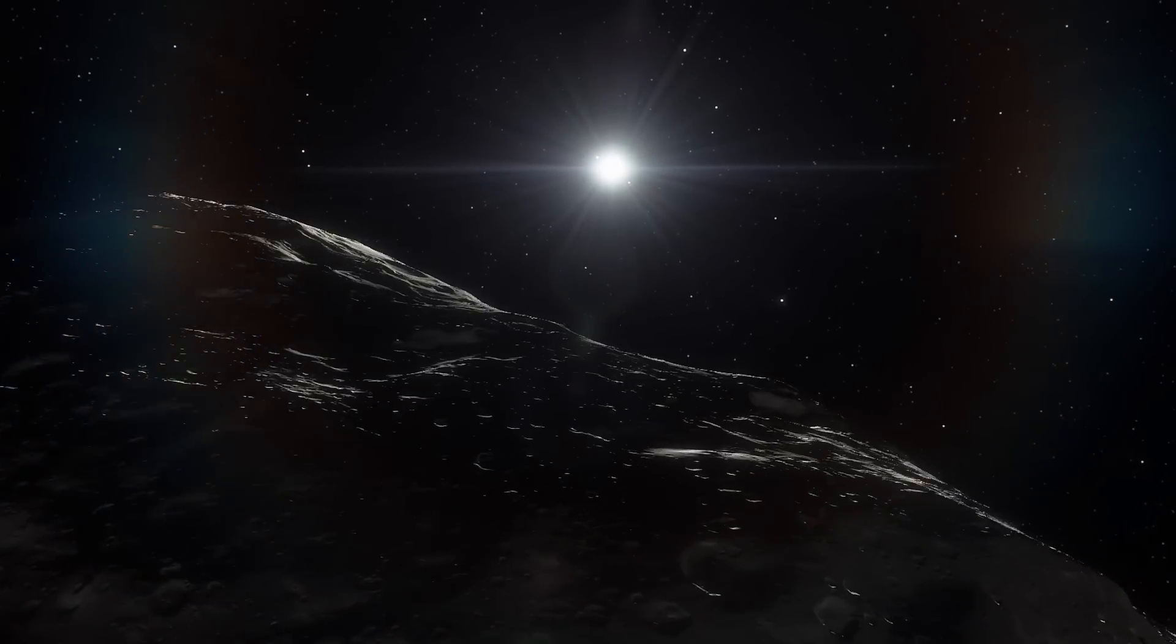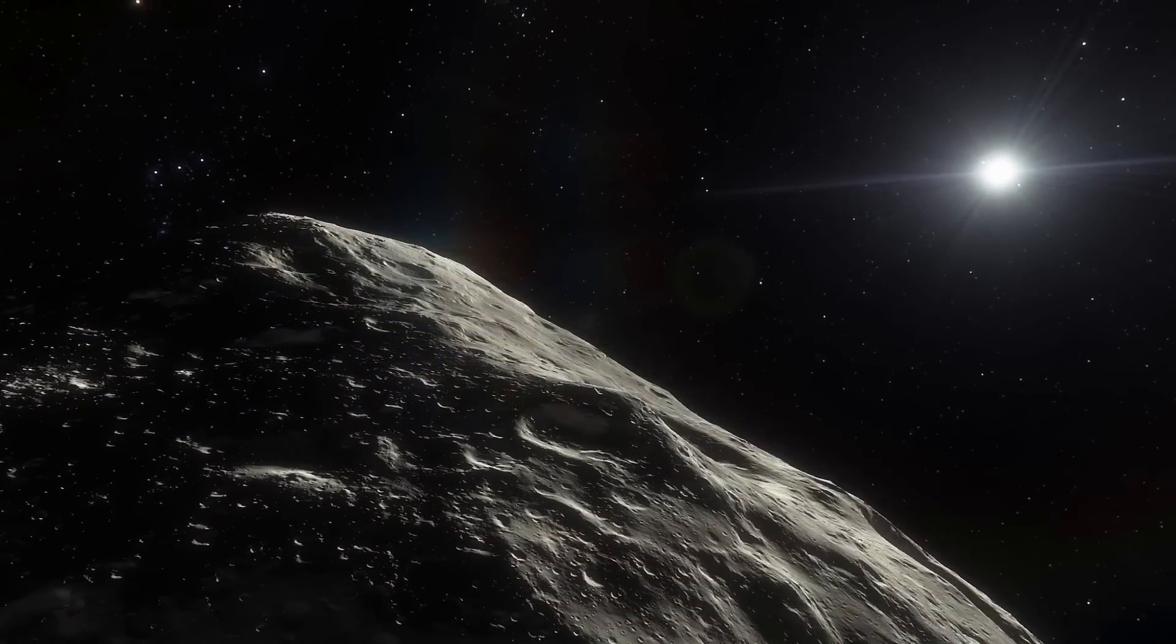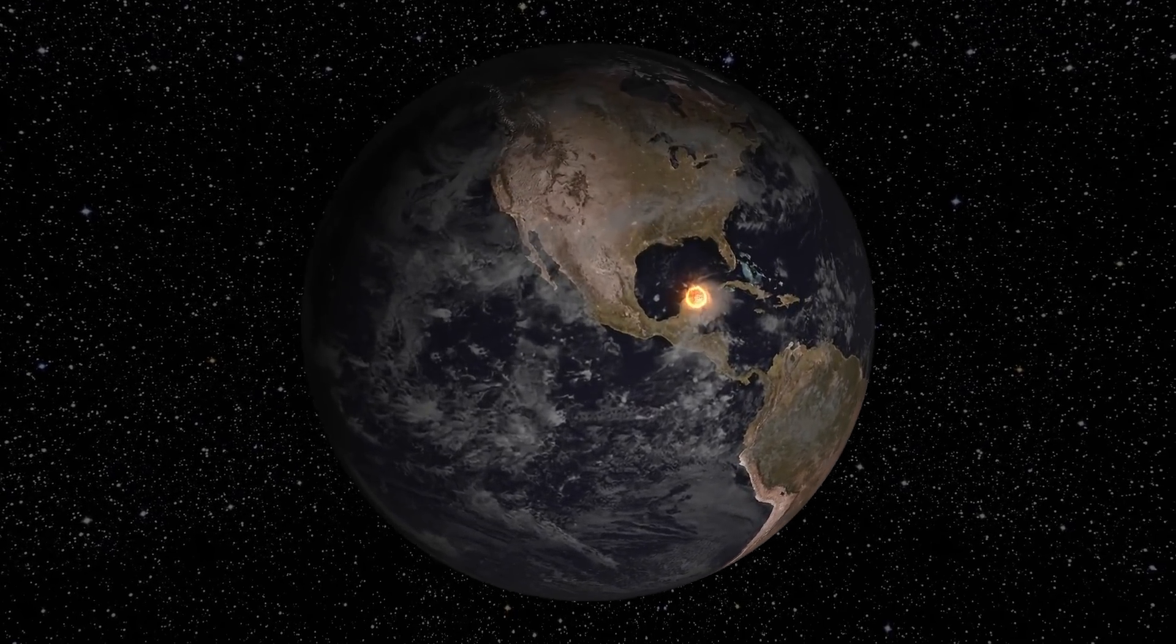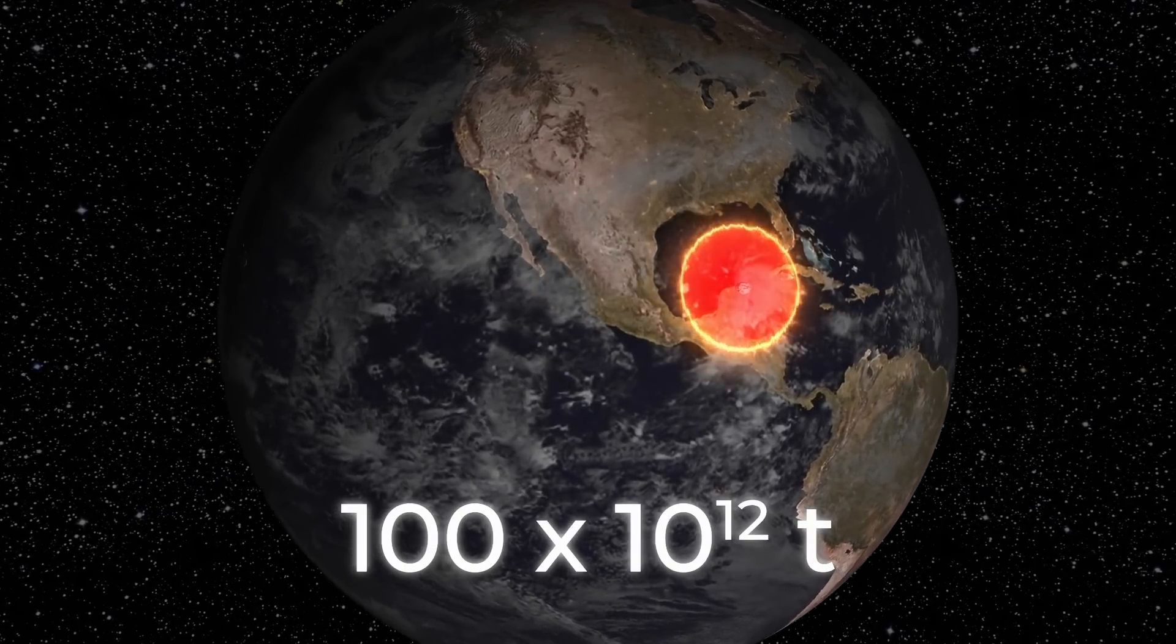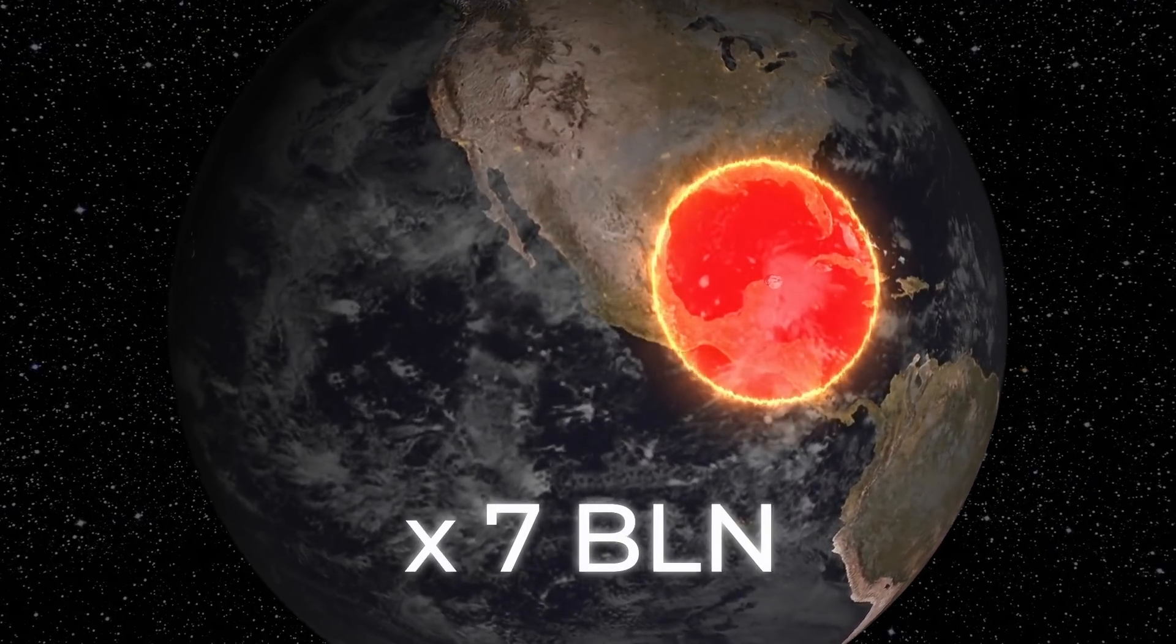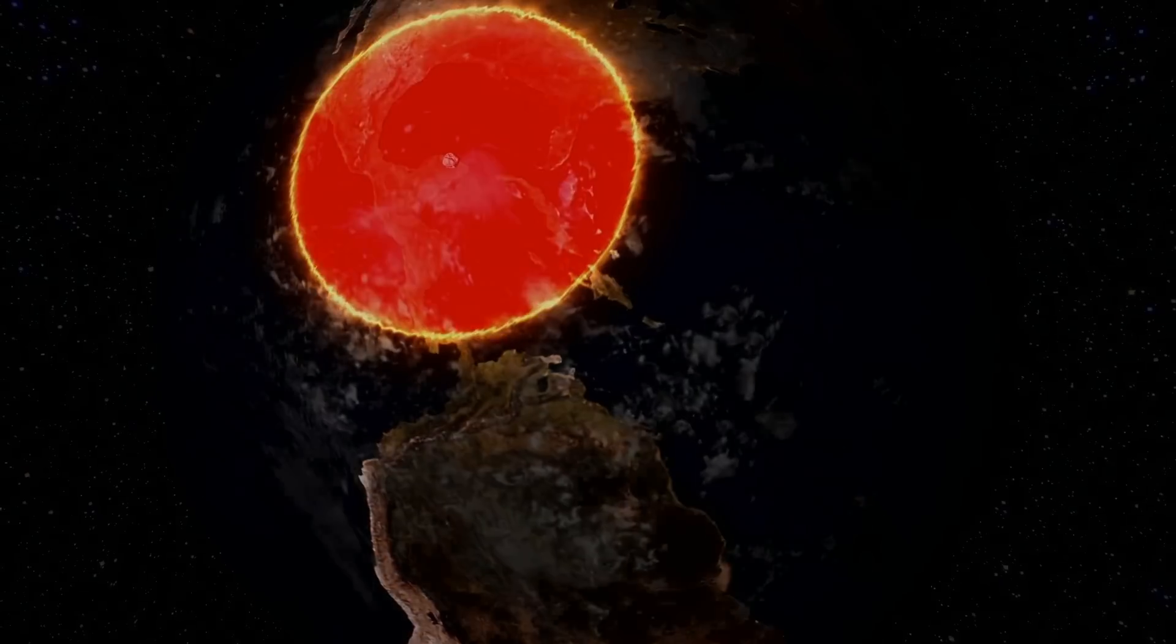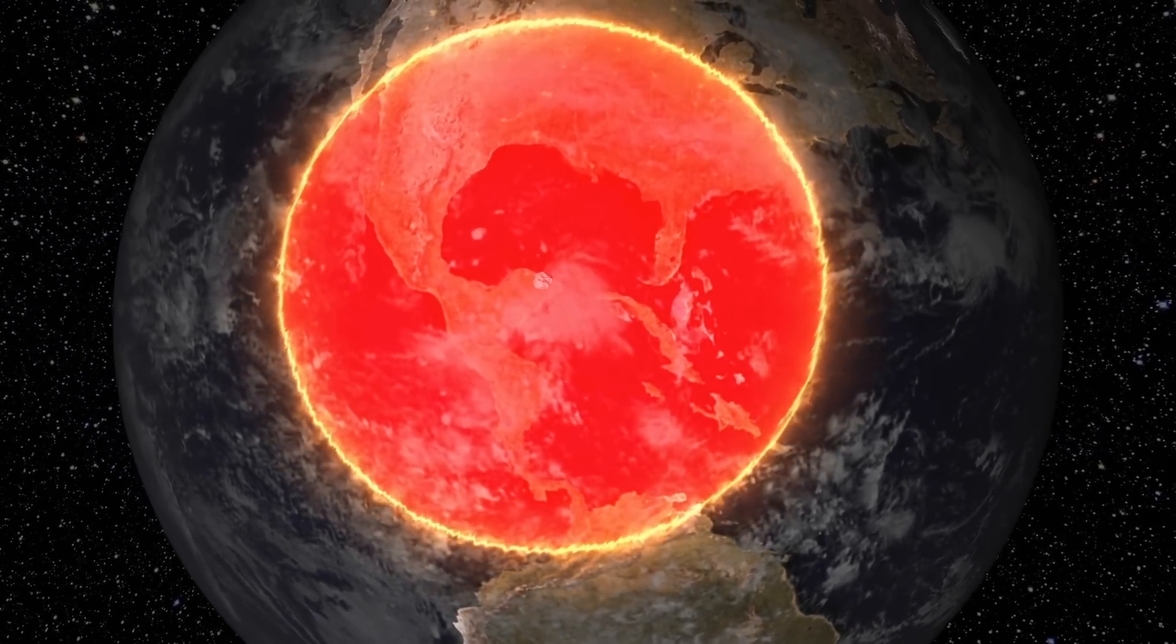But let's imagine that everything would happen according to the same scenario that the dinosaurs once faced. A huge celestial body would approach the planet and crash into it. The impact would cause an explosion equivalent to 100 trillion tons of TNT, which is about 7 billion times more powerful than the bomb that fell on Hiroshima. The consequences of the impact would become greater with every passing moment.